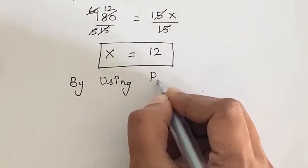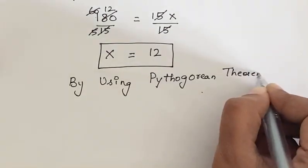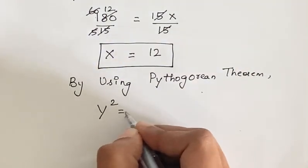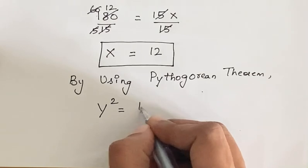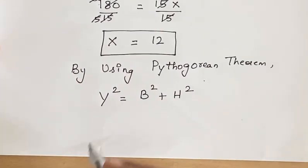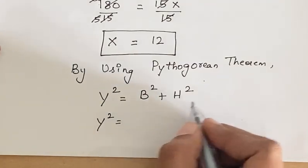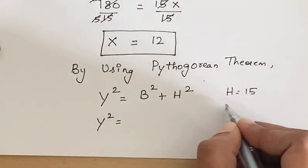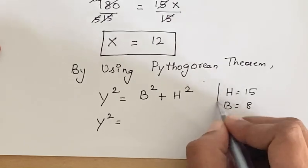By using Pythagorean theorem, we know that y squared equals b squared plus h squared, where b is base and h is height. So y squared equals—we know the value of height is 15 meters and base is 8 meters.